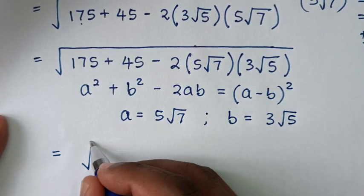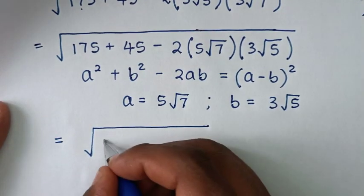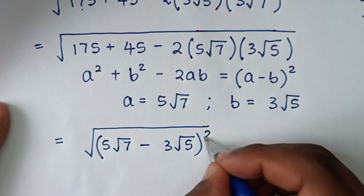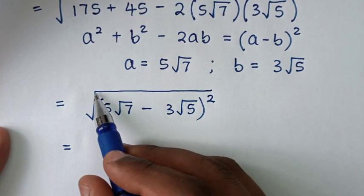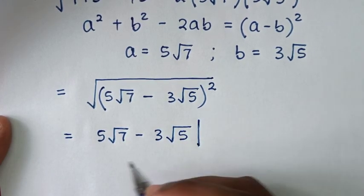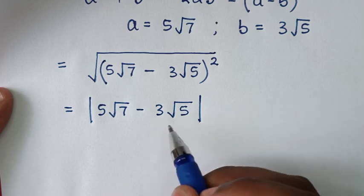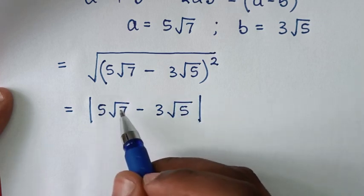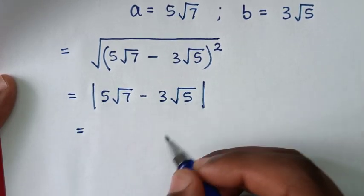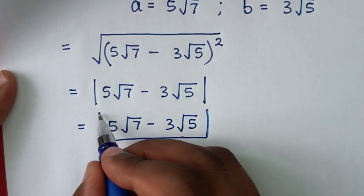So it will be equal to the square root of (a minus b) squared, which gives a minus b. Because 5 square root of 7 is greater than 3 square root of 5, the value is positive. Therefore, the simplified form is 5 square root of 7 minus 3 square root of 5.